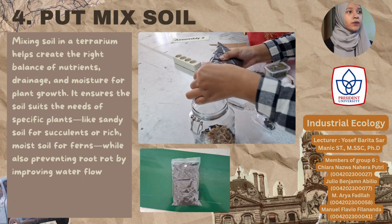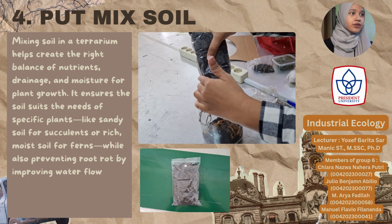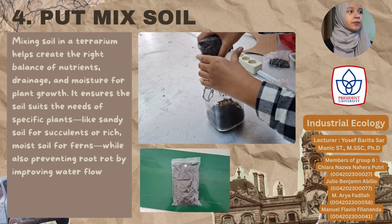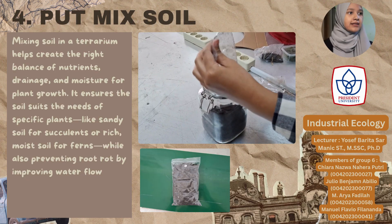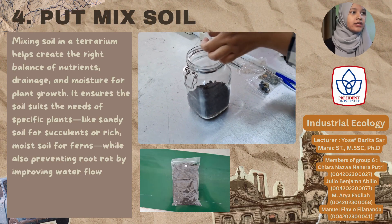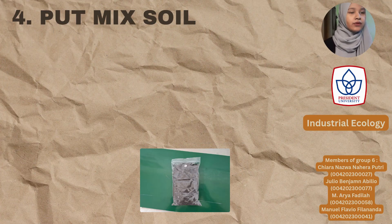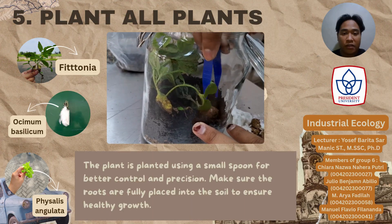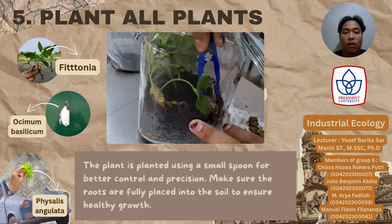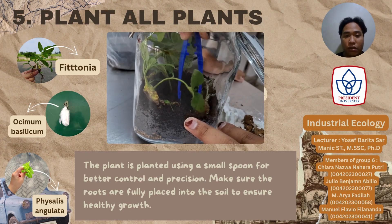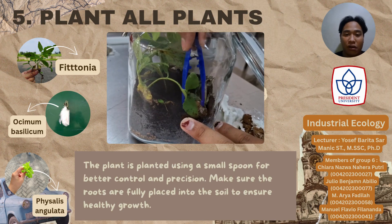Next is putting in the mixed soil. Mixing soil into the terrarium helps create the right balance of nutrition, drainage, and moisture for plant growth. It ensures the soil suits the needs of specific plants — like sandy soil for succulents or rich moist soil for ferns — while also preventing root rot by improving water flow. The plant is then planted using a small spoon for better control and precision. Make sure the roots are fully placed into the soil to ensure healthy growth.